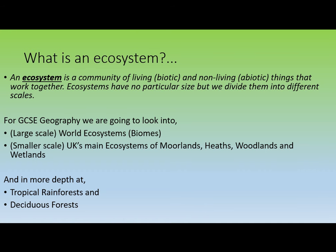A definition to begin with: an ecosystem is a community of living (biotic) and non-living (abiotic) things that work together. Ecosystems have no particular size. The biggest we're familiar with is the Earth itself, while ecosystems can be as small as a puddle — the water is the abiotic part and mosquito larvae are the biotic part. Even your head can be an ecosystem if you've got nits surviving on the abiotic environment of your hair.